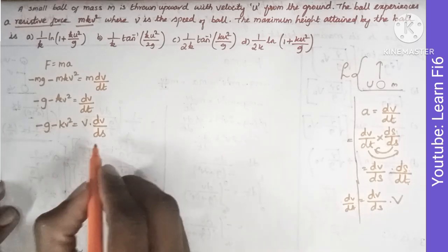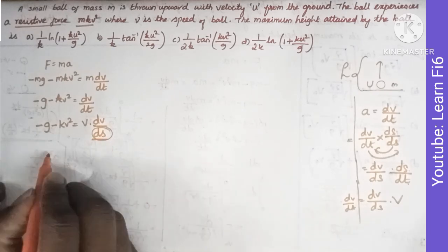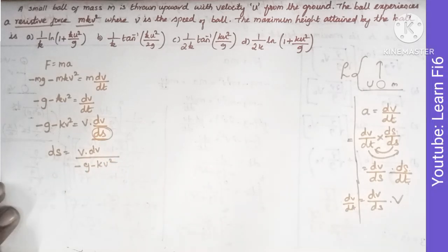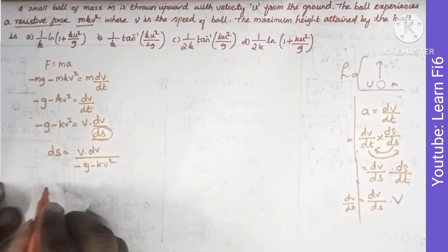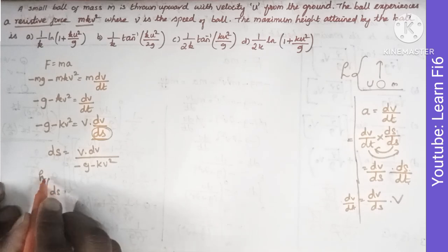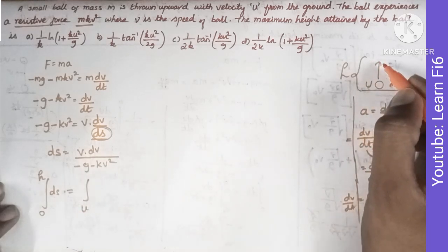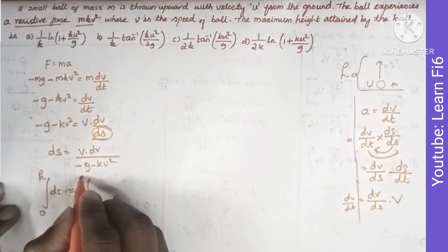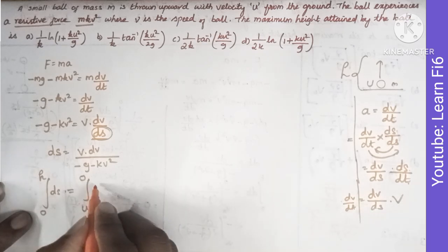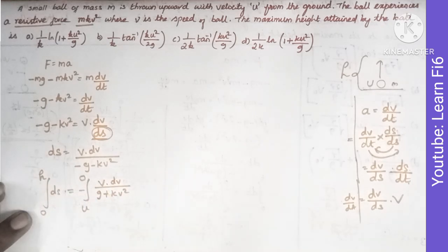Rearranging, ds equals v dv divided by (minus g minus kv²). Now we integrate both sides. The limits for displacement are 0 to h (ground to maximum height), and for velocity from u down to 0, since the ball's velocity decreases to zero at maximum height. Taking the negative sign outside gives: ds equals v dv divided by (g plus kv²), with a negative sign.